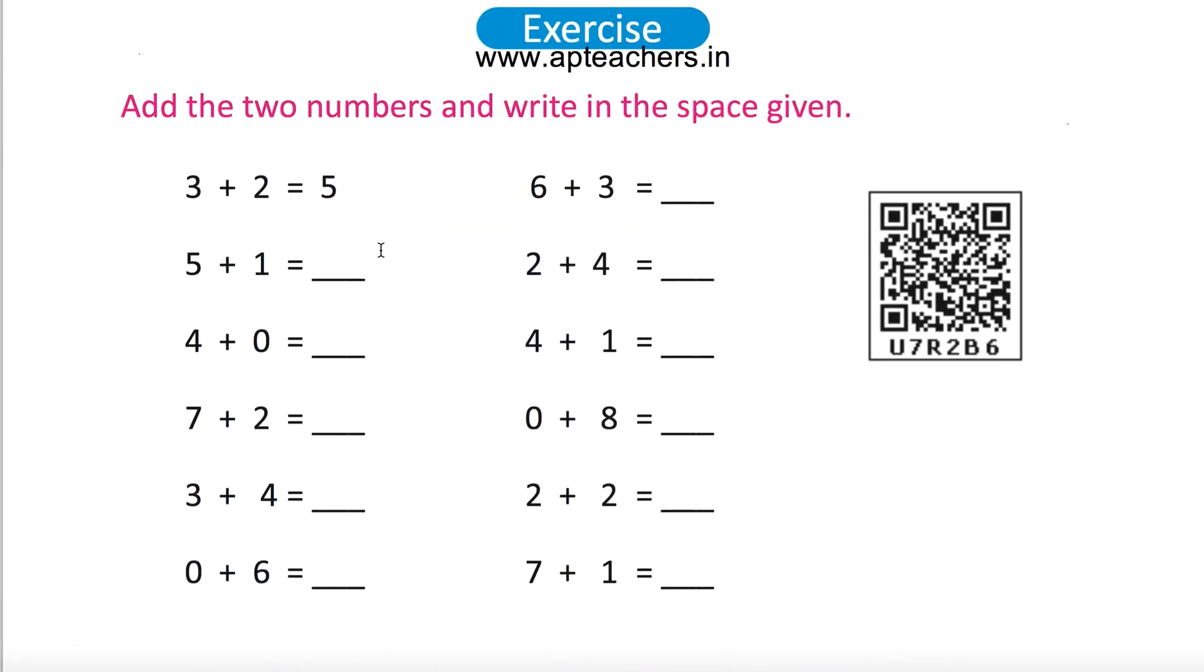Three plus two is five. Three plus two is five, five plus one is six. Four plus zero is not zero, it's four. Seven plus two equals nine. Three plus four equals seven. Zero plus six equals six. Six plus three equals nine. Two plus four equals six. Four plus one equals five. Zero plus eight equals eight. Two plus two equals four. Seven plus one equals eight.